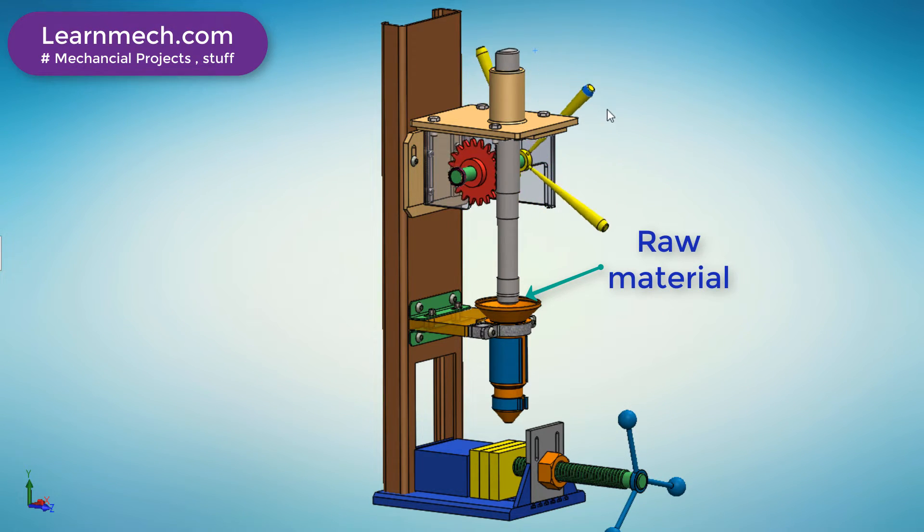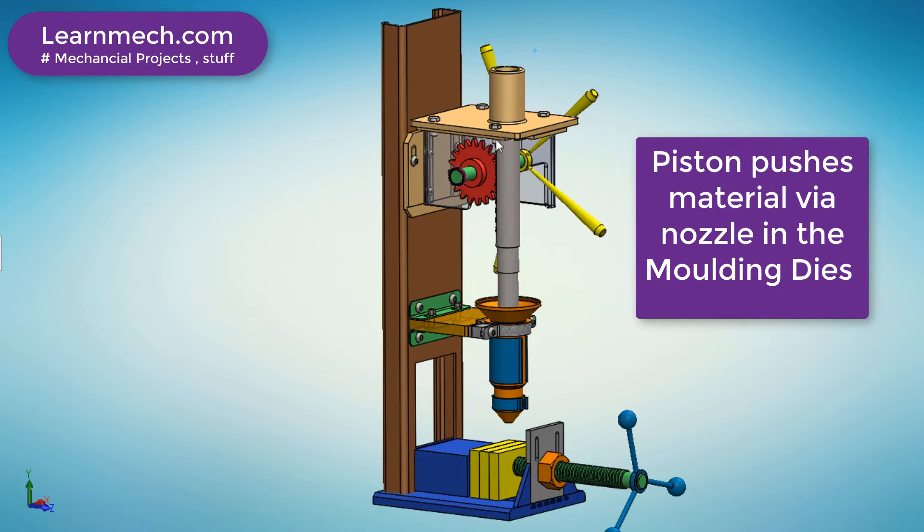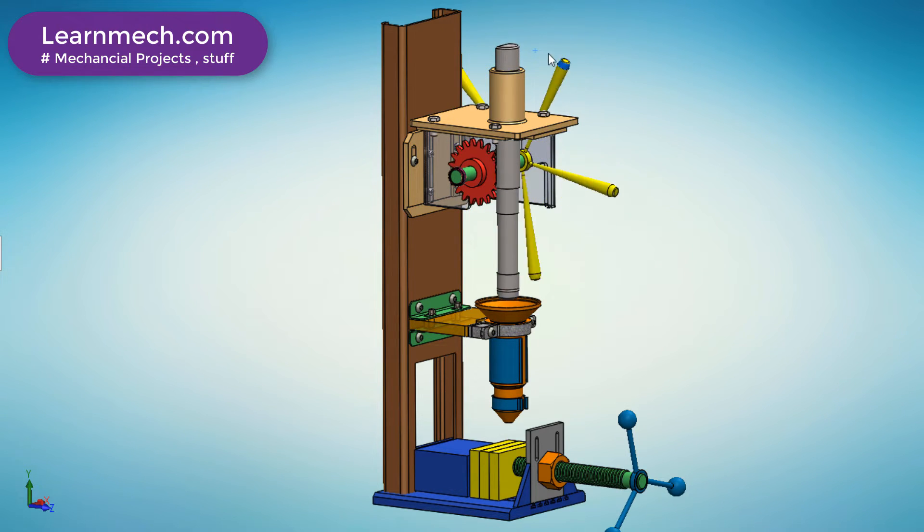The injection stroke starts as the plunger moves from upward to downward, forcing the raw material into the heating cylinder. This molten material is pushed inside the nozzle via the barrel.